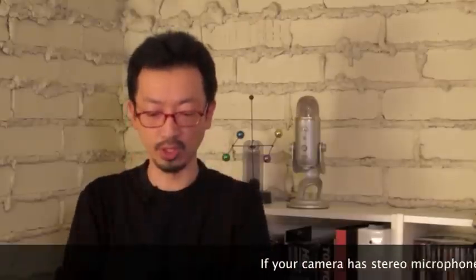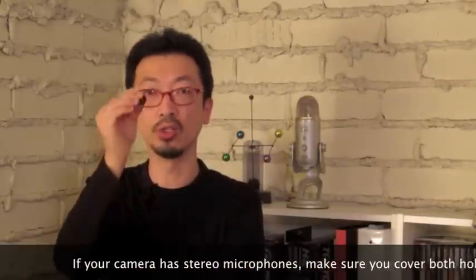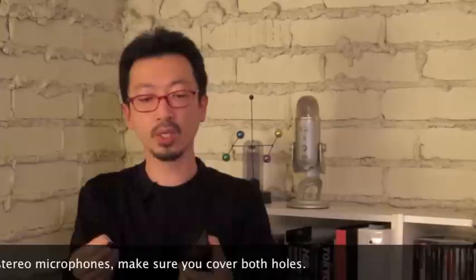Put one over the mic hole of your camera and the other one goes onto the earbud, and then you velcro the earbud sponge over the microphone and that will cut out wind noise.